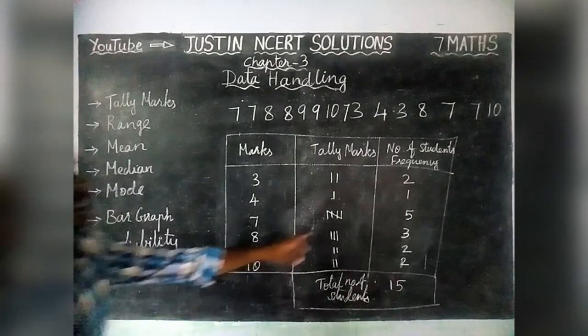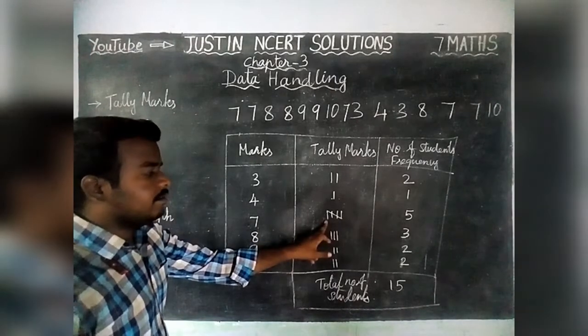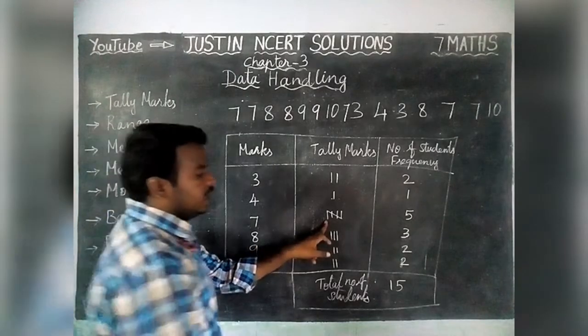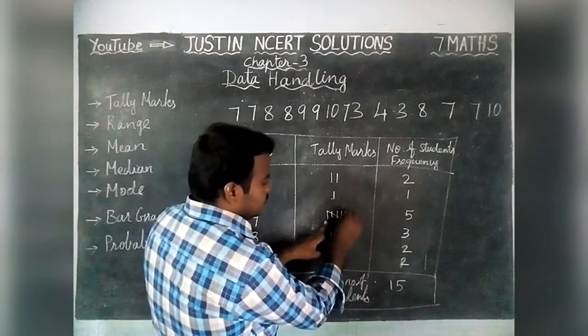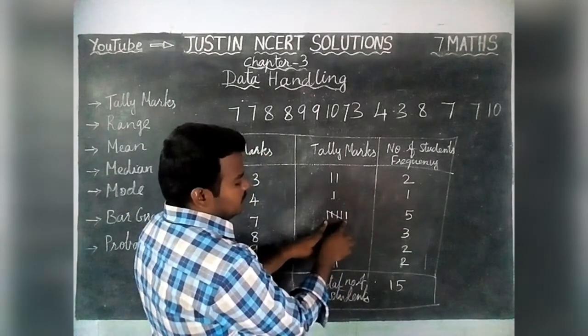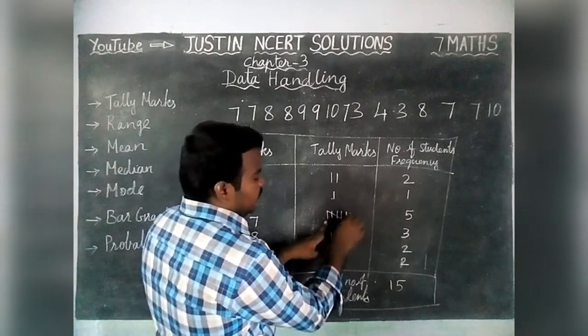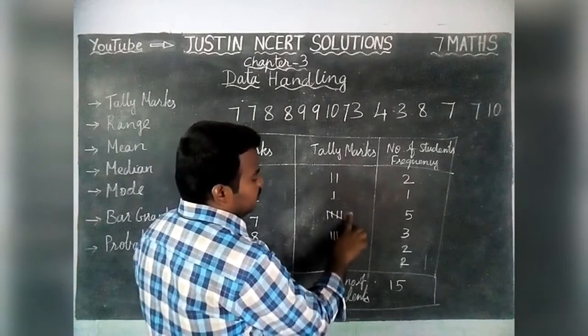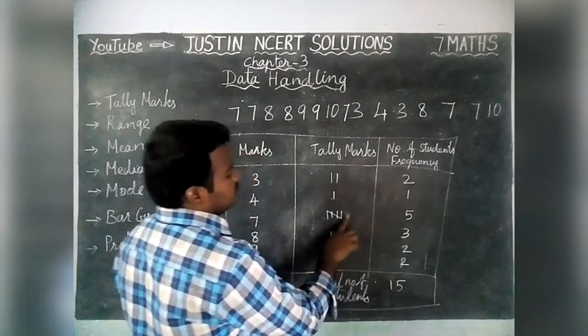If the count exceeds 5, we make a diagonal line for 5. If we write another line after that, it means 6, and one more line means 7. So that is how we continue writing tally marks beyond 5.